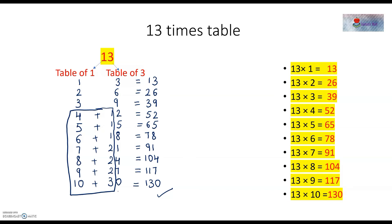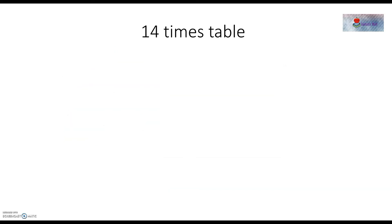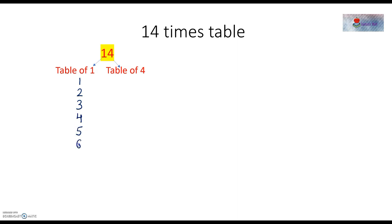So let's move to the 14 times table. In the 14 times table also we will follow the same method. First we will write the table of 1, then we will write the table of 4. So, the table of 1 is: 1, 2, 3, 4, 5, 6, 7, 8, 9, and 10.